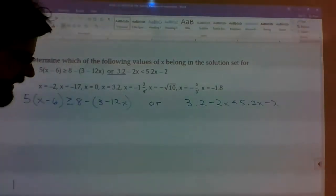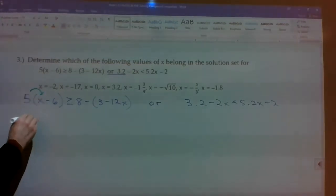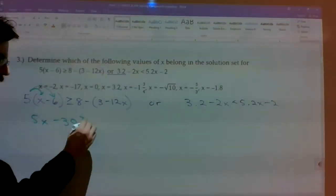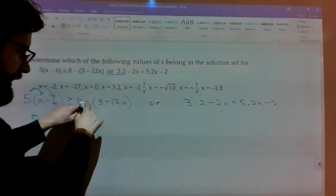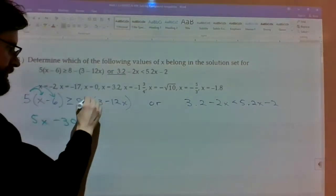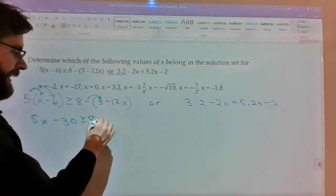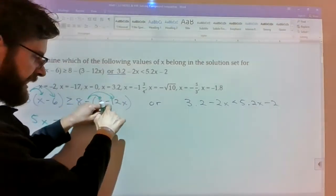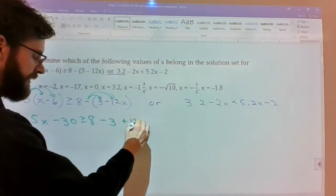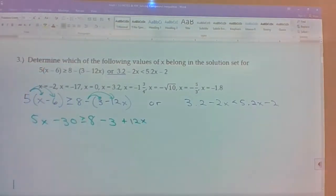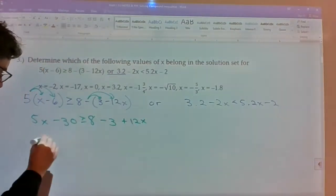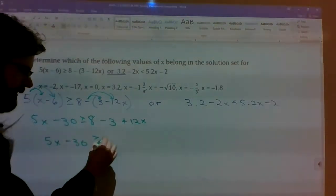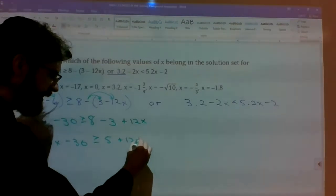Alright. Let's see if you got the right stuff. So you take 5 times x and get 5x, 5 times negative 6 is minus 30, is greater than or equal to 8. The minus gets distributed to both parts. So minus 3, it's 8 minus 3, and then a negative of negative 12x, that's a positive 12x. Alright. Combine like terms on the right, I can't do anything on the left.